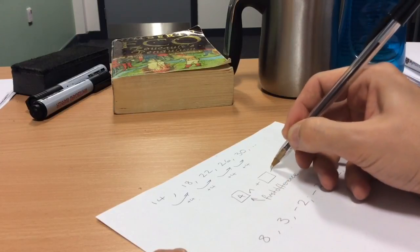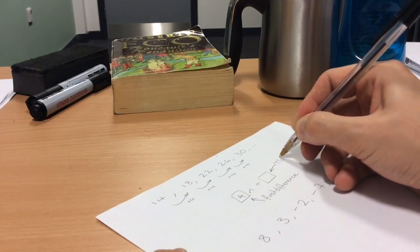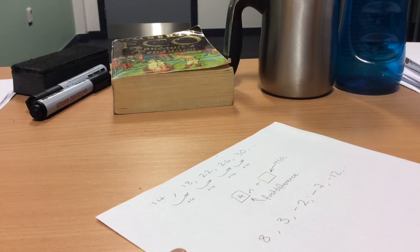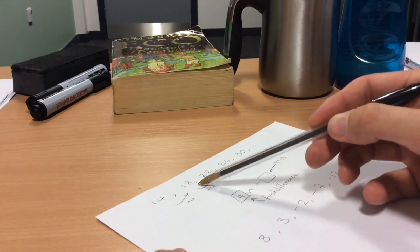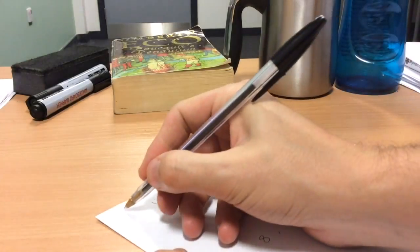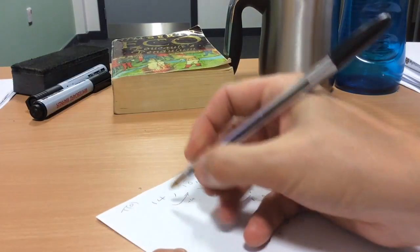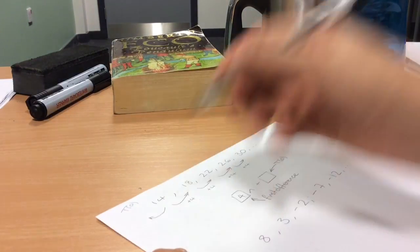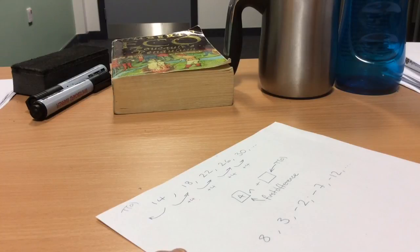And in the second box we put t naught, the zeroth term. Now the first term is 14, the second term is 18, the third term is 22. So what is term zero? Term zero is the term that would come before 14 in this sequence.